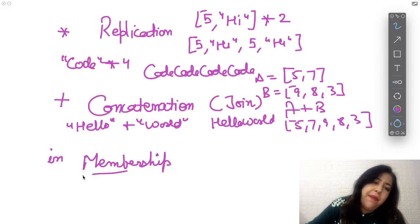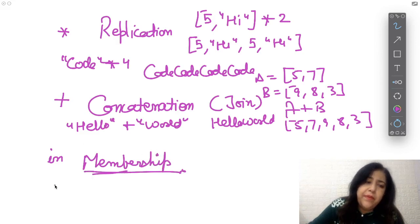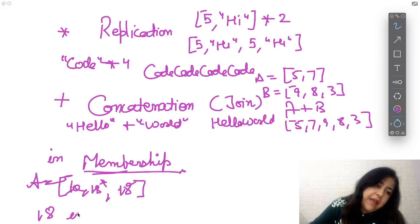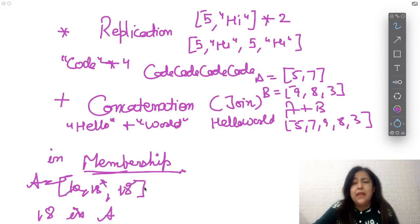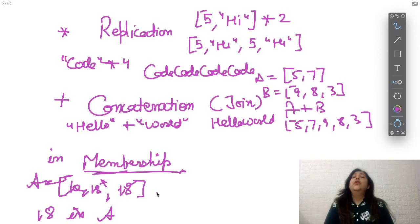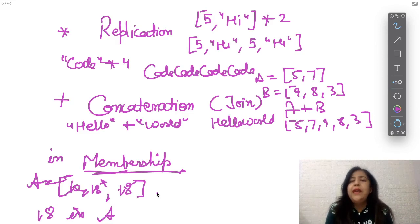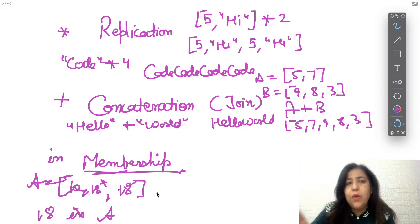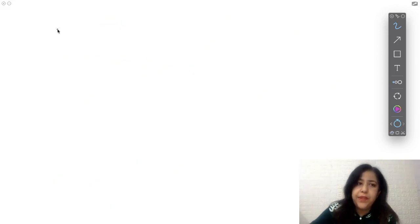The 'in' operator is called the membership operator. If you have list A = [10, 15, 18] and you write '18 in A', it checks whether 18 is present in A. If it is, it gives True; if not, it gives False. So it returns either True or False depending on whether the value exists in the list, string, or tuple.